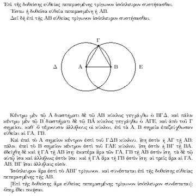The Elements introduced mathematical rigor through the axiomatic method and is the earliest example of the format still used in mathematics today, that of definition, axiom, theorem, and proof.